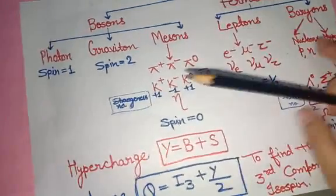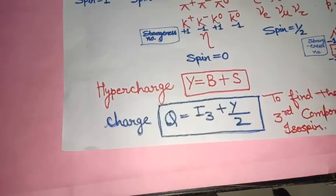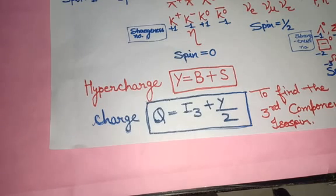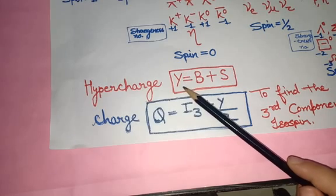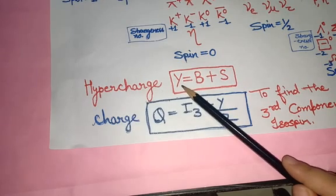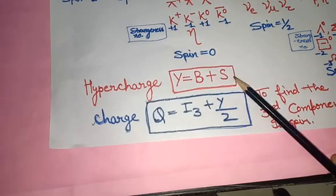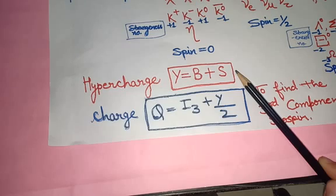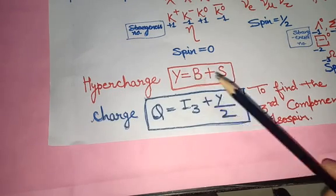The next property is hypercharge. What is hypercharge? It is also a property of all particles. Hypercharge is denoted by Y. The formula is Y = B + S, where B is the baryon number and S is the strangeness number. So when you need to find the hypercharge for any particle, you simply add the baryon number and the strangeness number.